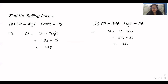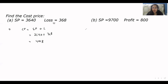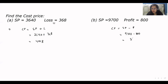Now let's discuss how to find the value of cost price. The formula for calculating cost price in case of loss is SP plus loss — selling price plus loss. The selling price is 3640 and the loss is 368, which means the total cost price of that article is 4008. And if you are selling an article for 9700 and you acquired a profit of 800, the formula is SP minus profit. That profit was earned before selling, so the cost price would be 9700 minus 800, which is 8900.